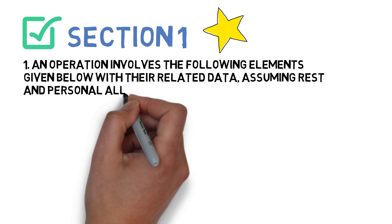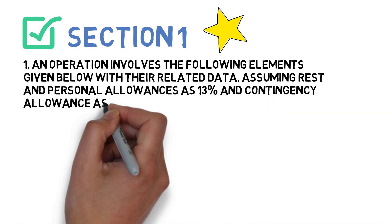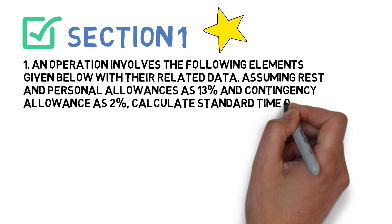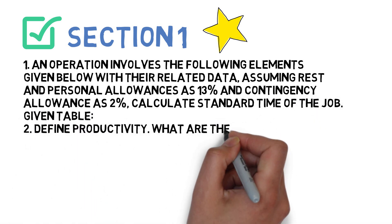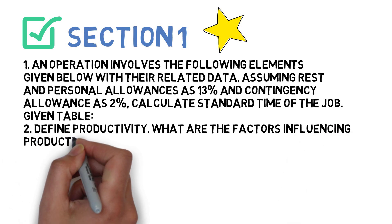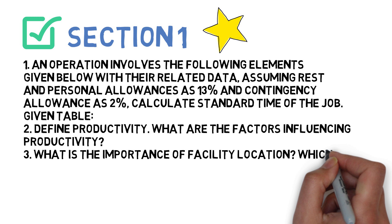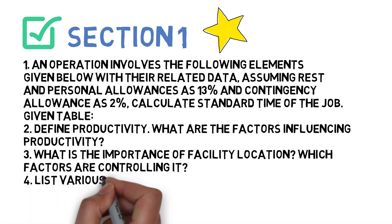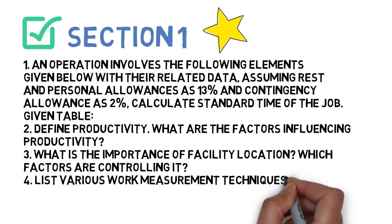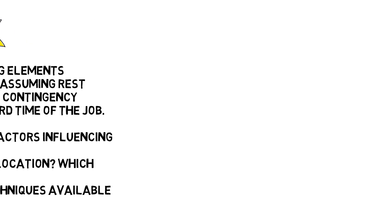Assuming rest and personal allowance of 13% and contingency allowance of 2%, calculate the standard time of the job. Second question: define productivity and what are the factors influencing productivity. Third: what is the importance of facility location and the factors controlling it. Fourth: list various work measurement techniques available and explain any one in detail.